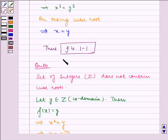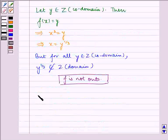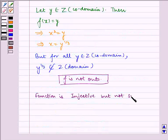Now, we can see that f is one-one and f is not onto. Therefore, the given function is injective but not surjective.